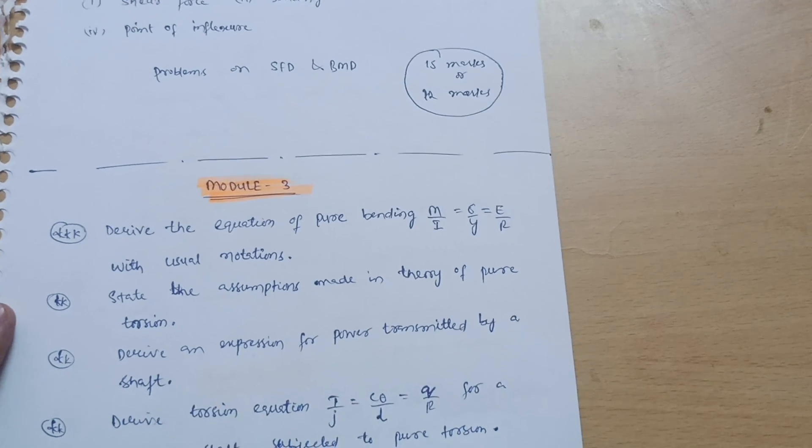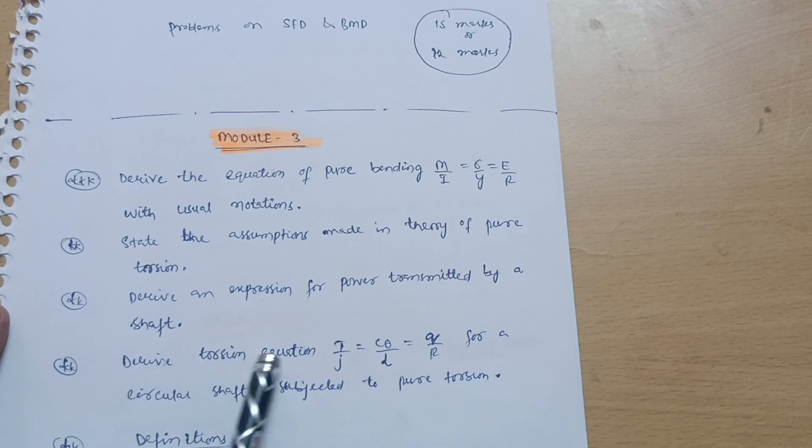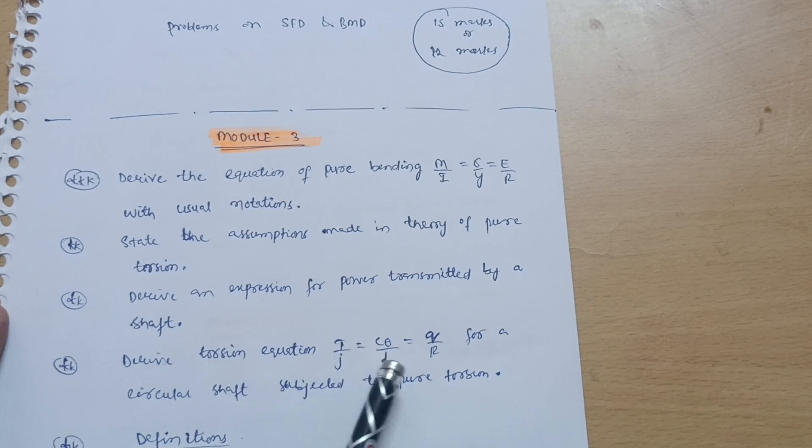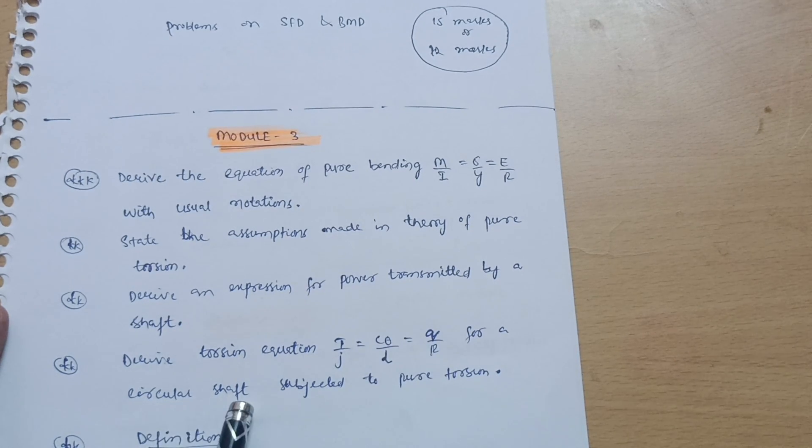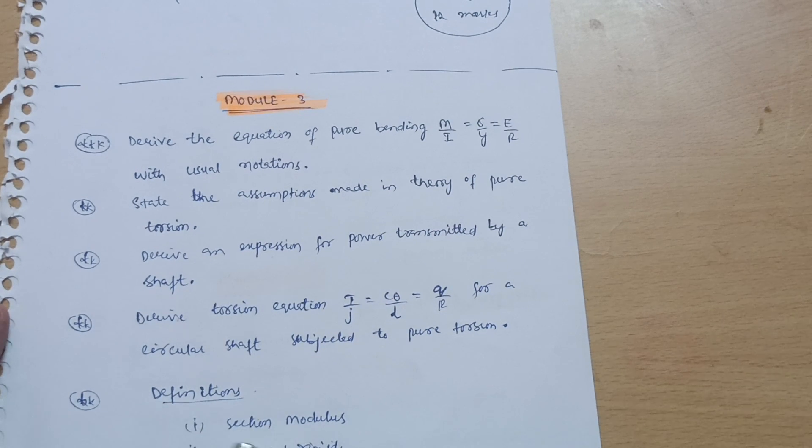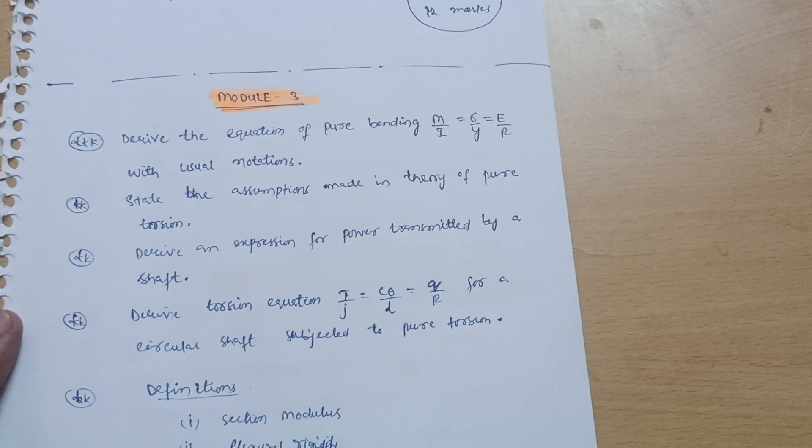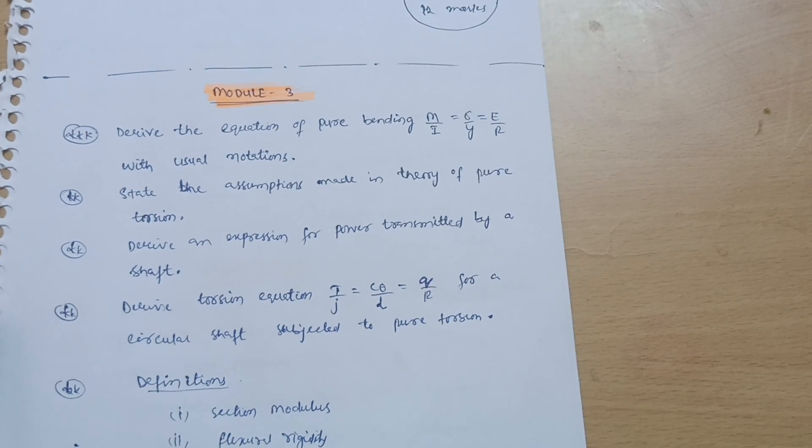With the usual notations, state the assumptions made in theory of pure torsion. Derive an expression for power transmitted by a shaft. This may be the possible question. And derive torsion equation T by J is equal to C theta by L is equal to Q by R for a circular shaft subjected to torsion. And some definitions like section modulus, flexural modulus of rupture.